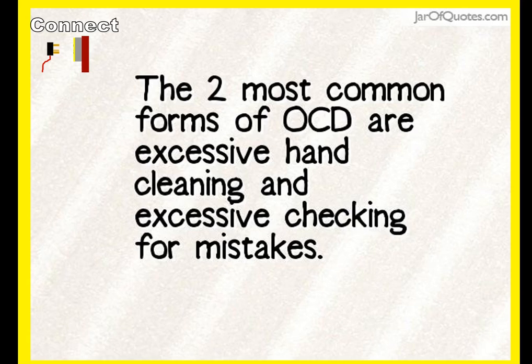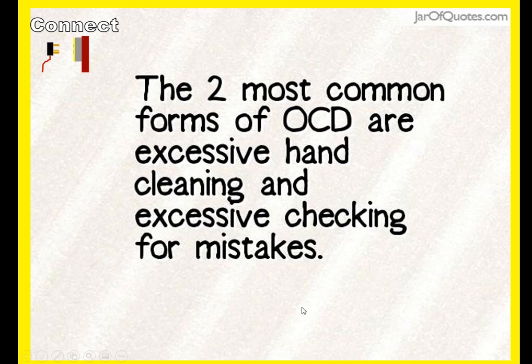This is the second lesson on OCD, and this is on explanations. I always like to start lessons with just a few quotes to get you thinking about it. First of all, I just want to make it clear that you do need to know a couple of forms of OCD. The two most common ones are excessive hand cleaning and excessive checking for mistakes. Make sure you are aware that there are different types and different forms of OCD.